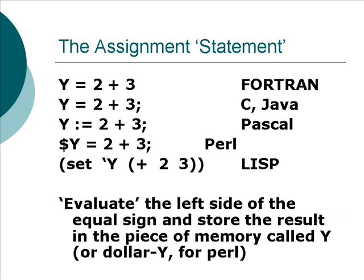The third example, we have Y := 2 + 3 semicolon. Now the colon equal is mandatory there. The semicolon is mandatory in some places, but in other places you're not allowed to use it. So the Pascal example is a little confusing there, unless you know the right rule.